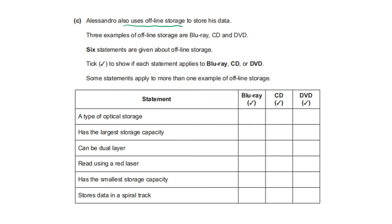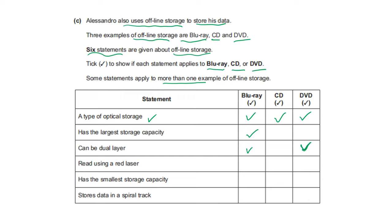Alexander uses offline storage to store his data. Three examples of offline storage are Blu-ray, CD, and DVD. Six statements are given — tick to show if each applies to Blu-ray, CD, or DVD; some may apply to more than one. A type of optical storage — all three, Blu-ray, CD, and DVD, are optical storage. Has the largest storage capacity — Blu-ray. Can be dual layered — Blu-ray and DVD; both can store data on both sides of the disk.